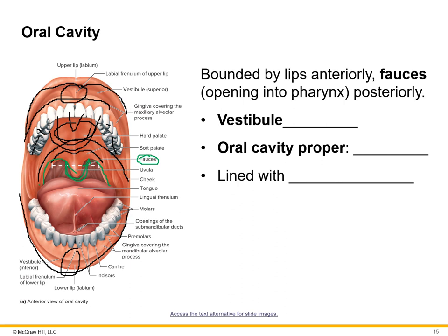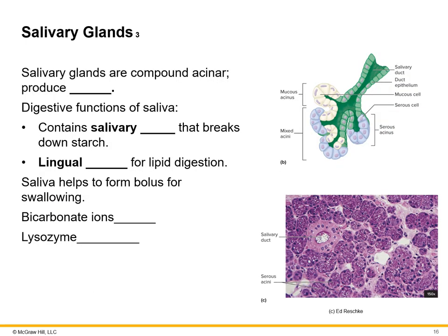The tongue is tethered to the floor of the mouth by the lingual frenulum. The soft tissue on the bottom of the teeth, or gums, is called gingiva; gingivitis is inflammation of the gums. The oral vestibule — your buccal cavity, tongue, and mouth space — is lined with stratified squamous non-keratinized epithelium.